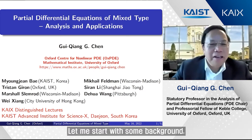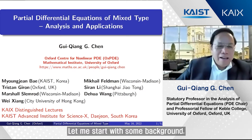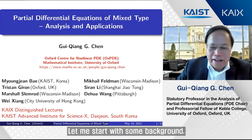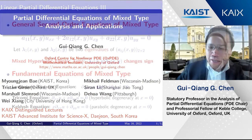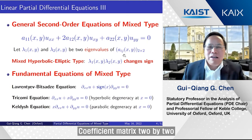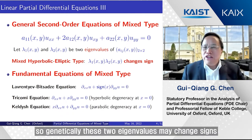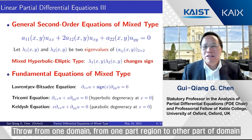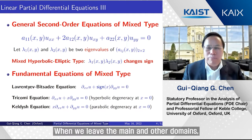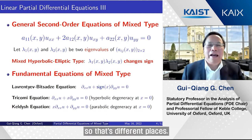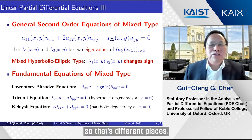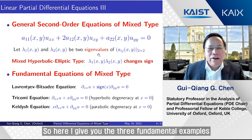Let me start with some background. The coefficient matrix is two-by-two and symmetric, and you have two eigenvalues. Generically, these two eigenvalues may change sign from one domain to another — from one region to another, at different places.